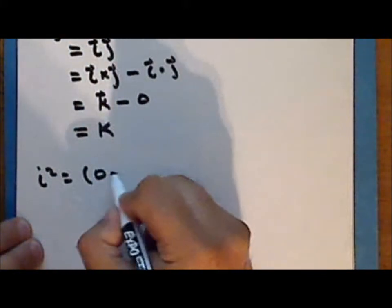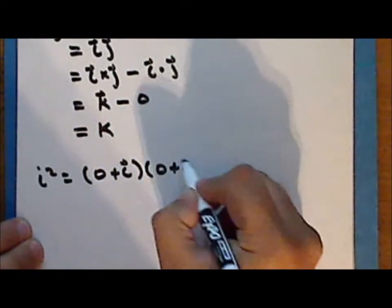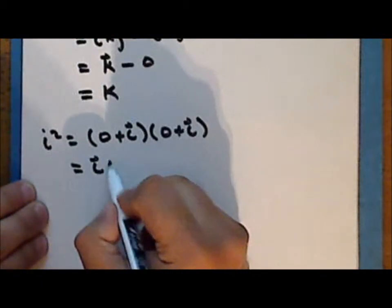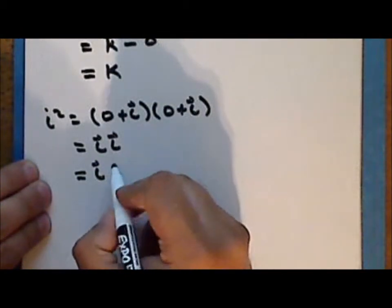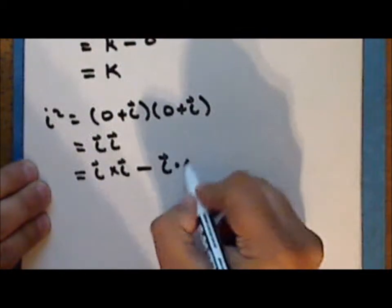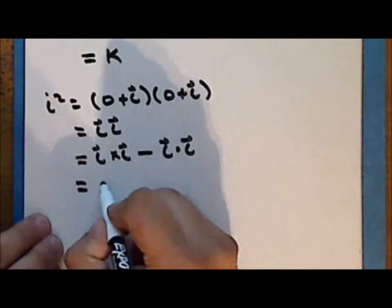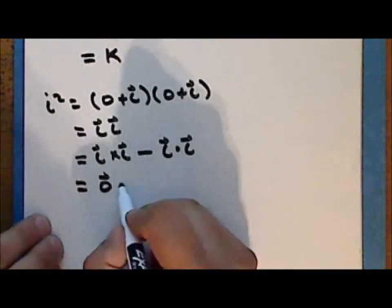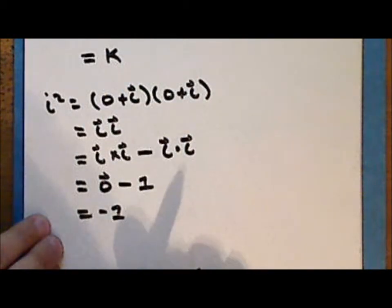i squared is the product of (0 + i⃗)(0 + i⃗), which is i⃗ times itself — the cross product of i⃗ with i⃗ minus the dot product of i⃗ with itself — giving the zero vector minus 1, which is equivalent to the quaternion −1, or the scalar −1.